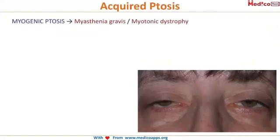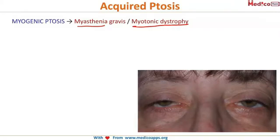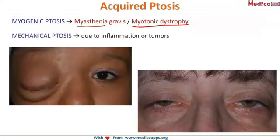The third type is myogenic ptosis, due to a problem with the muscles. Myasthenia gravis and myotonic dystrophy clearly cause myogenic ptosis. The fourth type is mechanical ptosis — as the word implies, when any mass increases the weight or pressure on the eyelid, it tends to fall down, causing mechanical ptosis.